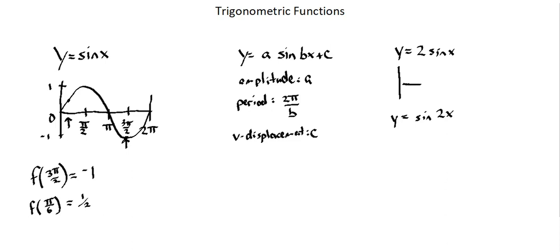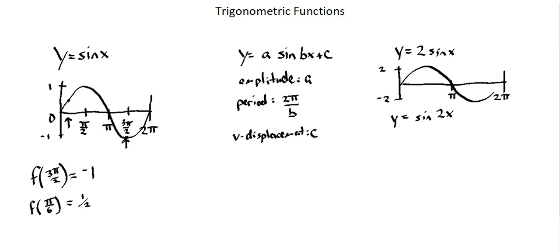We'll see how a given function results in a variation in output compared to our first example. Let's look at y equals 2 times sine of x. My amplitude is 2, so my range is now negative 2 to 2. I don't have any other adjustments, so I'm going from 0 to 2π in one period. Instead of going up to 1 and down to negative 1, I'm going up to 2 and down to negative 2 in one period. The amplitude in y equals 2 sine of x is 2.